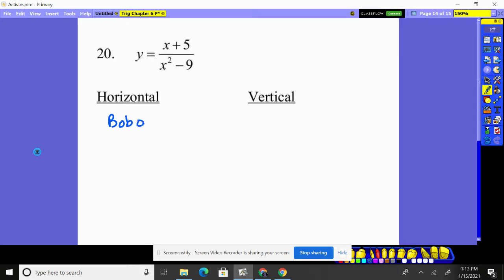Horizontal, we always use the expression Bobo, bottom, eats DC. If it's bigger on bottom, it's going to be y is zero. If it's bigger on top, it's going to be none. If exponents are the same, we're going to divide the coefficients.